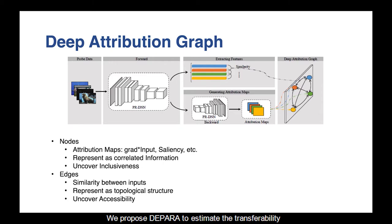We propose DeepHara to estimate the transferability. To construct DeepHara, we firstly randomly sample a set of unlabeled data, called probe data. DeepHara is constructed by feeding the probe data to the pre-trained deep neural network. The nodes correspond to the inputs and are represented by their vectorized attribution map with regard to the output of the model.